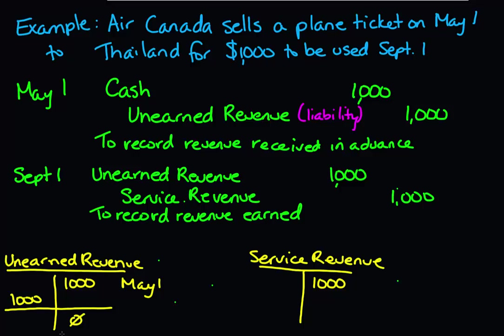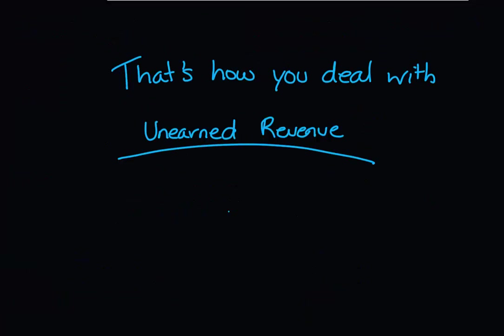So when you receive money in advance from a customer, record it as a liability as unearned revenue. And as you earn it, bring it over to the income statement as revenue and decrease your liability account. That's how you deal with unearned revenue. Thanks for watching, everyone.